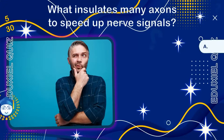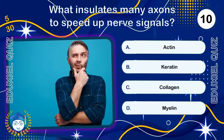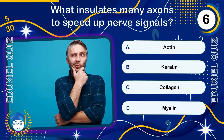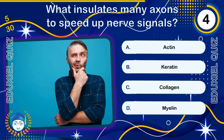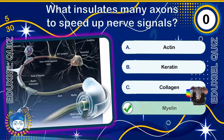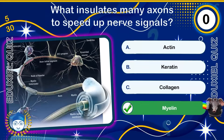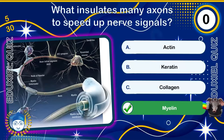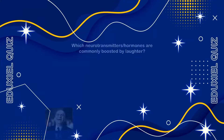What insulates many axons to speed up nerve signals? Myelin is a fatty substance that coats many nerve fibers, speeding up electrical signals in the nervous system. Without myelin, nerve impulses would travel up to 100 times slower. Diseases like multiple sclerosis result from the breakdown of myelin.